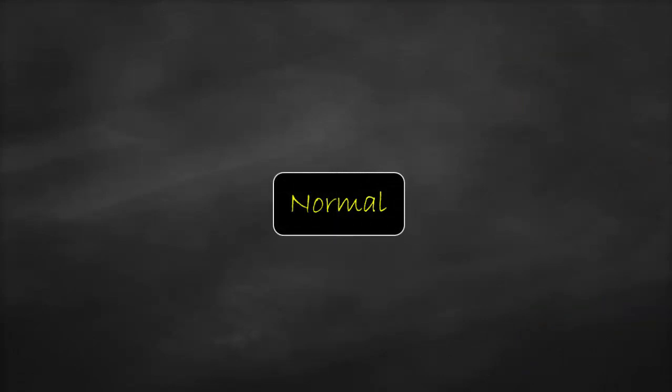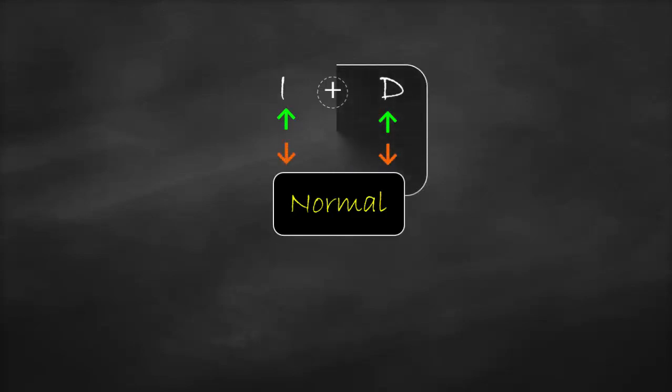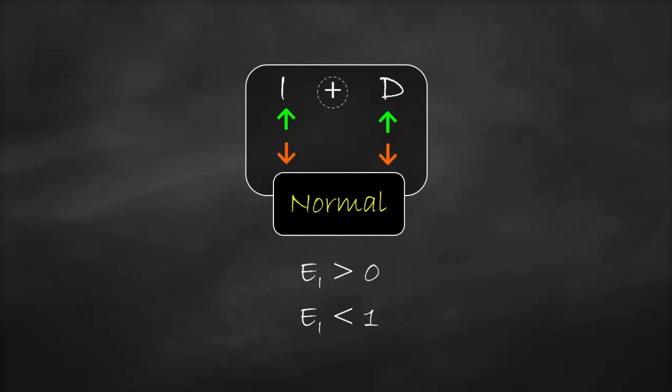A normal good means we have a positive relationship between income and demand — income and demand move in the same direction. If income goes up, demand goes up; if income goes down, demand goes down. Therefore, income elasticity will be bigger than zero. Also, if income elasticity is bigger than zero but lower than one, this good is a normal necessity.